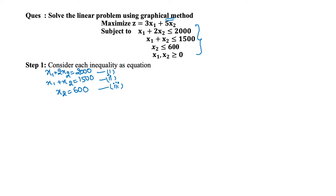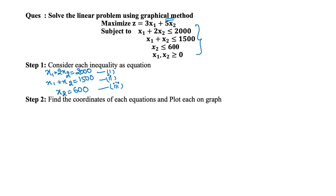The second step in the graphical method — as we have seen, the graphical method is applicable only when we have two decision variables. Here I have x1 and x2 as my decision variables. That is why we can plot it in two-dimensional space. So now we will find the coordinates for each equation and then plot them on the graph.